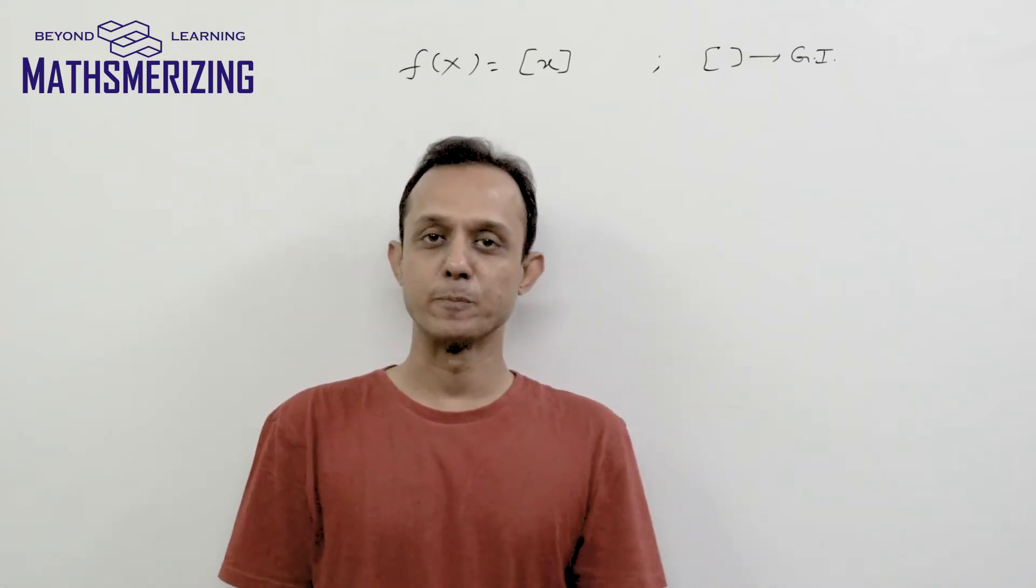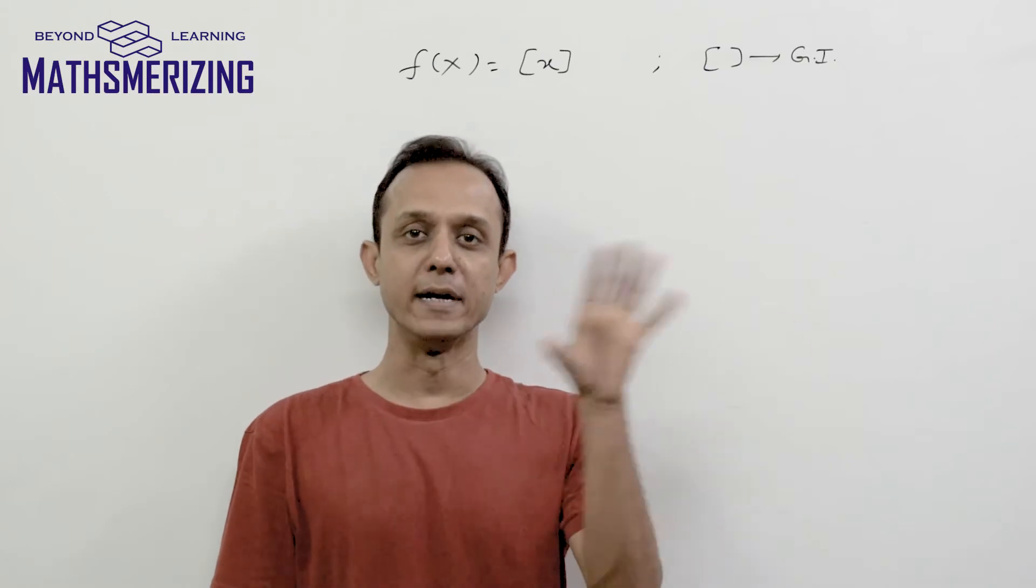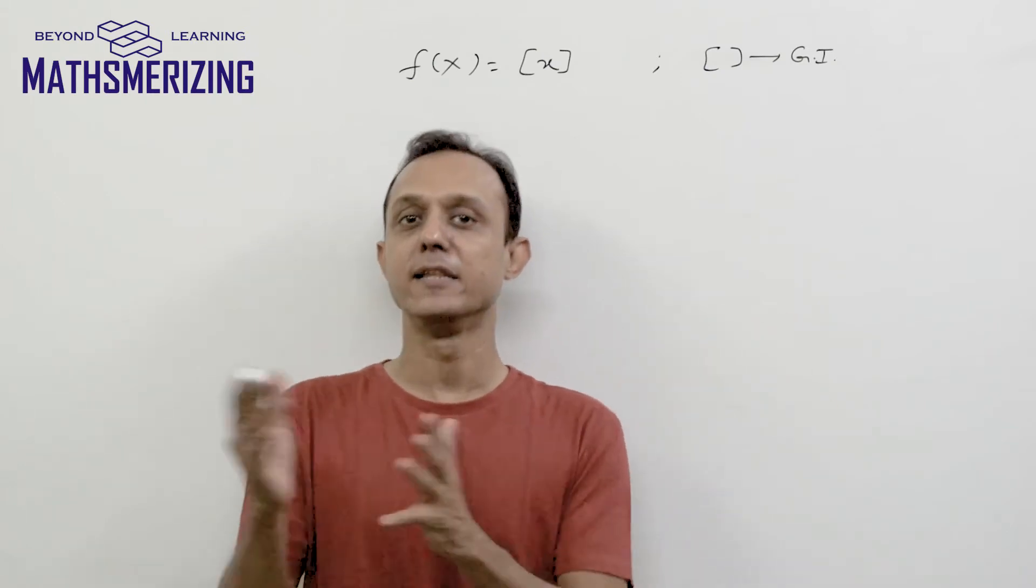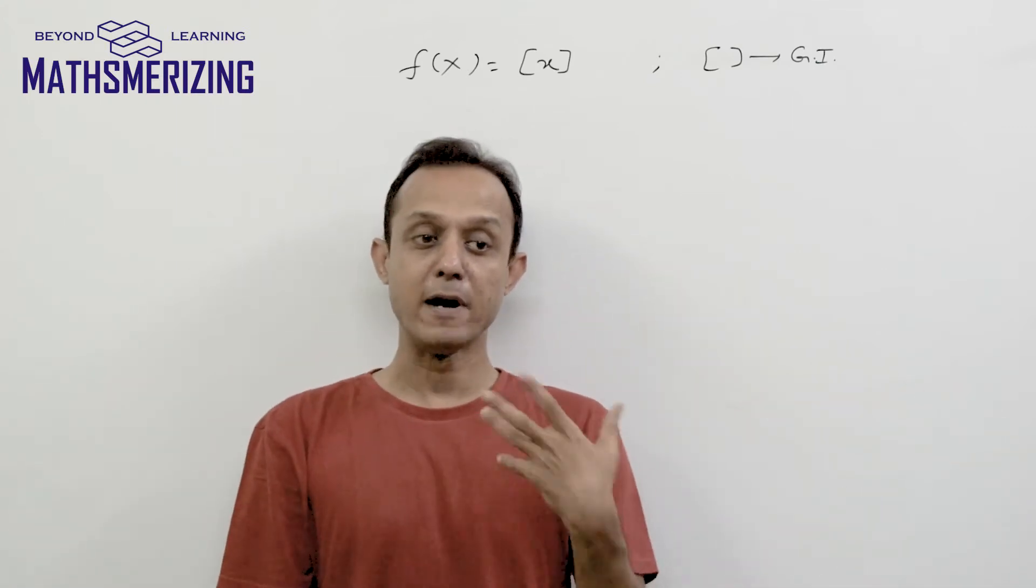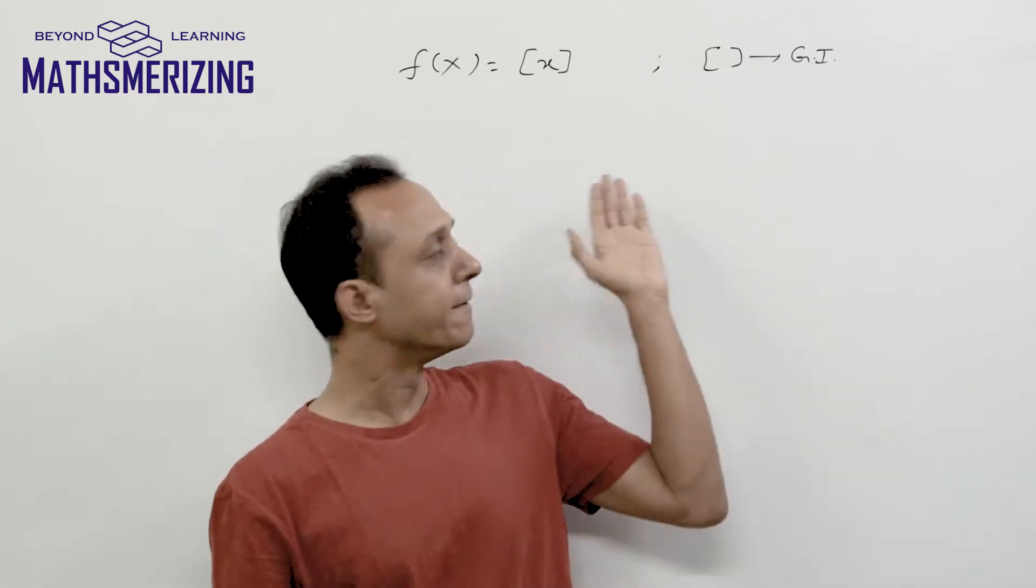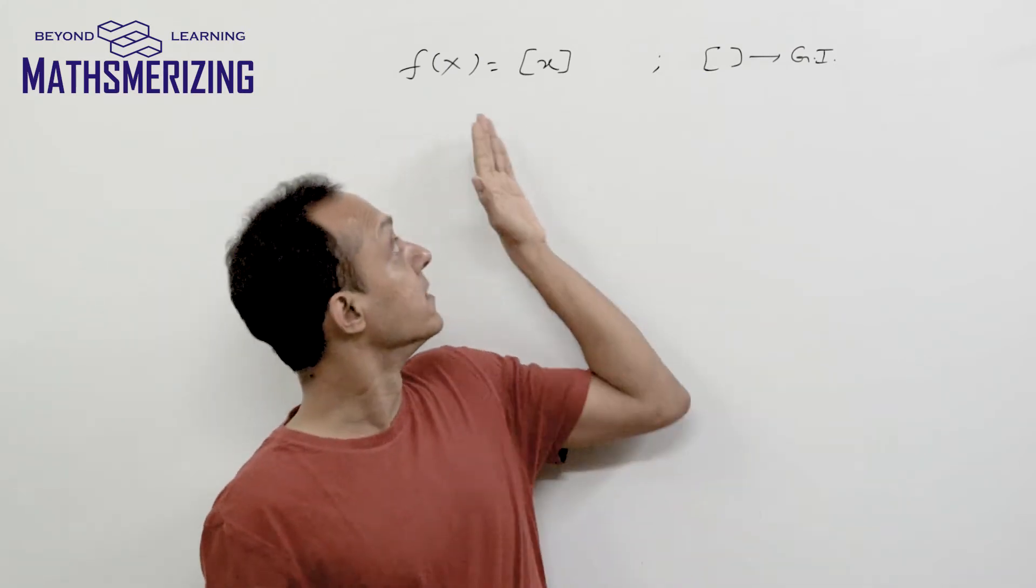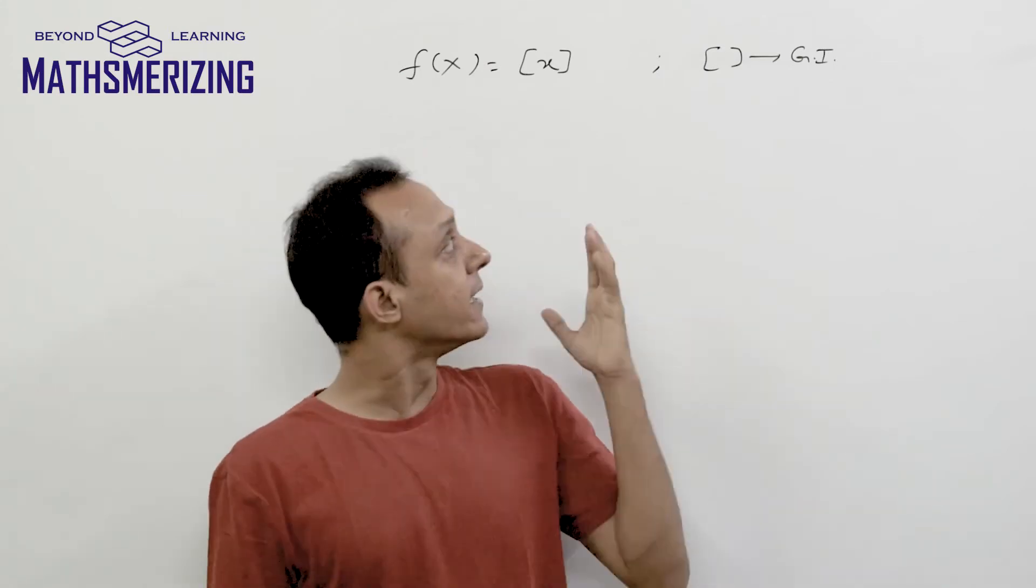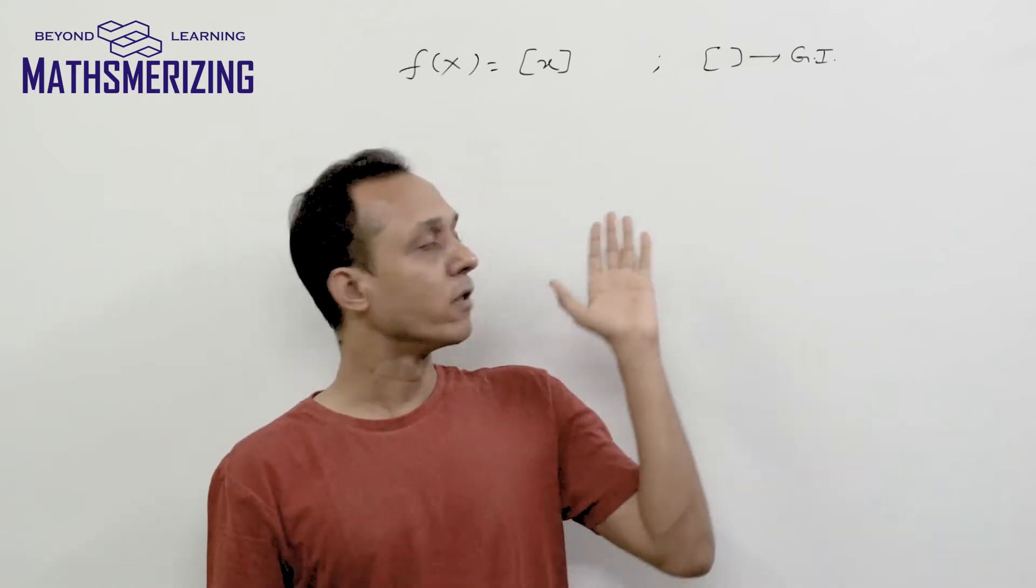Today we'll discuss the greatest integer function. As the name suggests, it has something to do with integers. Humans have more affinity towards integers than any other numbers like rational, irrational, complex, or hypercomplex numbers. I fail to understand why so many students and some teachers find it difficult and find it tough to solve problems when it concerns greatest integer function. So we'll explore what greatest integer function is and its properties so that we'll be able to solve related problems.